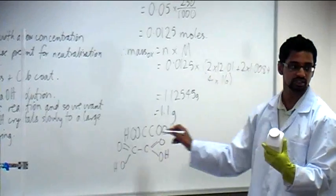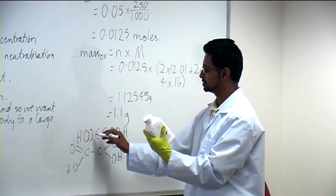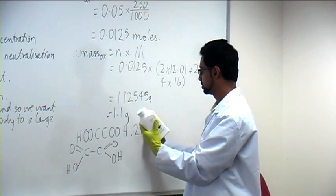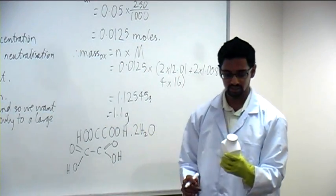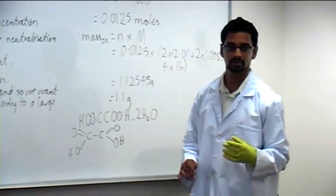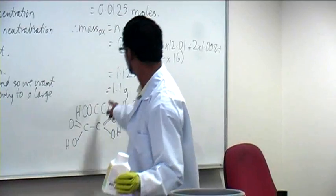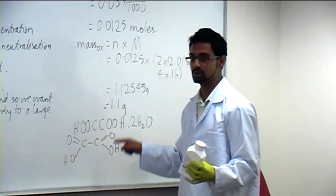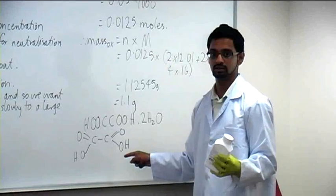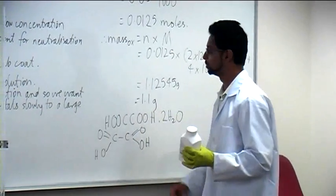Oxalic acid is given as HOCCOOH·2H2O. So within this crystal structure, there is also water. When we weigh out 1.1 grams, we want 1.1 grams of oxalic acid only, but this hydrated form gives us oxalic acid and water.